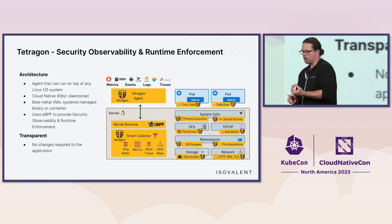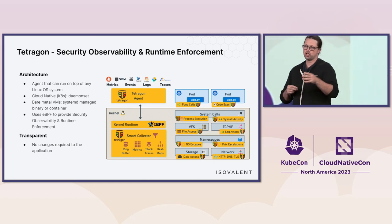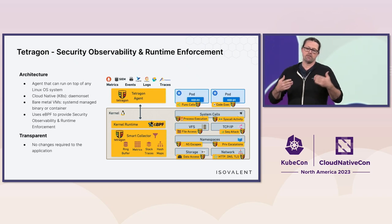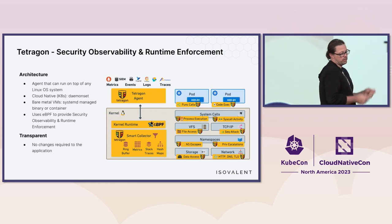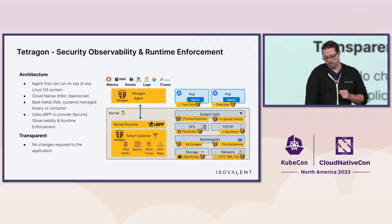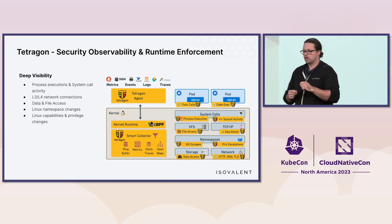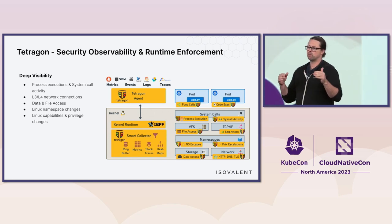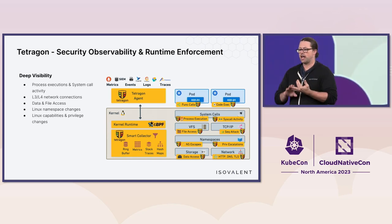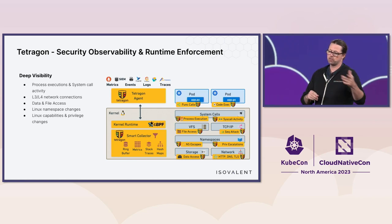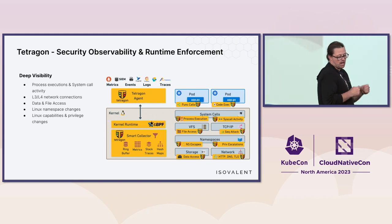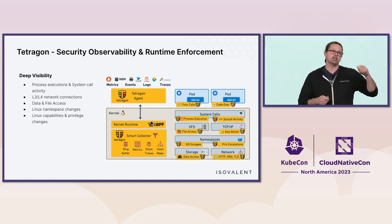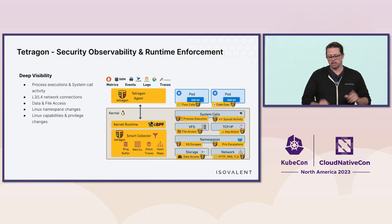We want to do this transparently — we don't want to get into the application world where you have to modify your applications to get this data. We want a single agent you deploy, and then all of a sudden you get visibility and really good enforcement. We're not just at the syscall level; we're getting down into DNS requests, HTTP requests, TLS, what files are being opened — deep inspection in the kernel, mapping that back to binaries, user space, Kubernetes labels. That's the Tetragon viewpoint of the world.